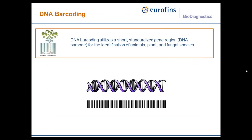As Denise mentioned, we wanted to develop a genetic test to accurately identify Palmer Amaranth. We pursued a DNA barcoding method. DNA barcoding is a common technique that utilizes a short, standardized gene region — sometimes referred to as a DNA barcode — for the identification of animals, plants, and fungal species. You sequence this short gene region and determine the pattern of A's, G's, C's, and T's, which is unique to that sample, and then compare this pattern to a library or database of other species-specific barcodes to find the exact match and make an identification down to the species level.